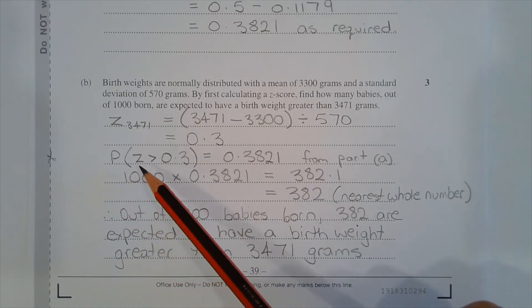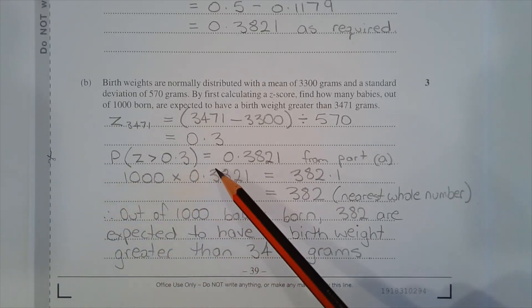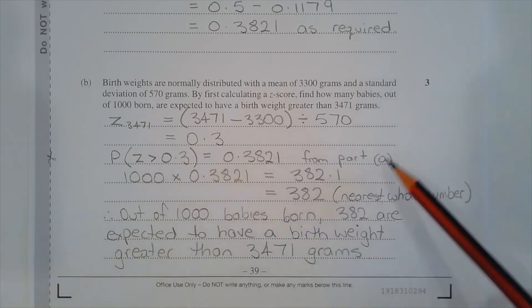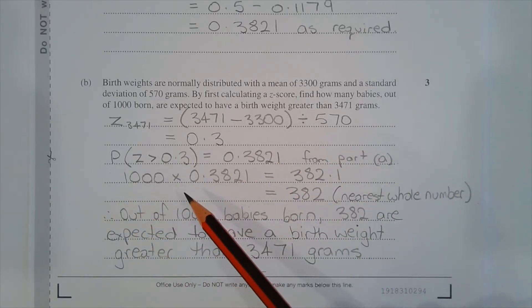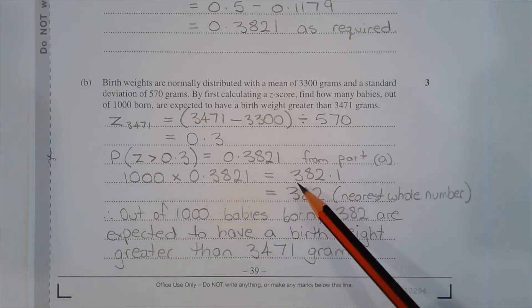The probability that z is greater than 0.3 equals 0.3821 from Part A. Therefore, 1000 multiplied by 0.3821 equals 382.1, which equals 382 to the nearest whole number.